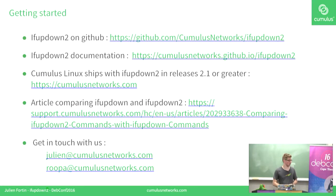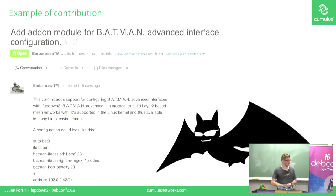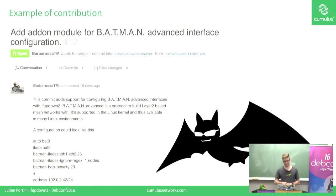How to get started: IfUpDown2 is available on GitHub along with documentation, even though we need to update it. IfUpDown2 ships by default as the default networking manager since Cumulus Linux 2.1. You can get in touch with me or Rupa. I also want to show an example of a contribution made three weeks ago — about 200 lines of code — that adds support for Batman, a layer-2 protocol for mesh networking.